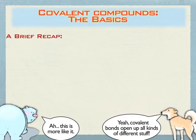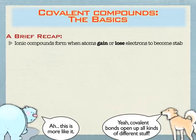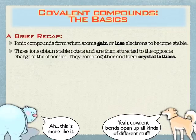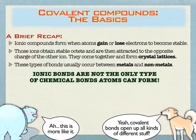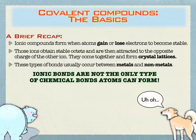Let's quickly review ionic compounds. Ionic compounds form when atoms gain or lose electrons. Those ions are attracted to each other and form strong crystal lattices, leading to a lot of strength. These are metals and non-metals making these bonds — something from the left side of the periodic table bonding with something from the right side. But this is not the only kind of bond atoms can form.